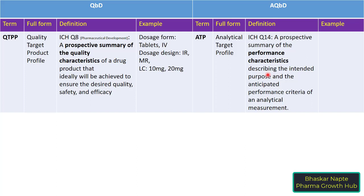We need to understand what important performance characteristics the proposed analytical procedure must meet for its intended purpose. These performance characteristics are essentially the parameters considered during method validation — for example, specificity, precision, accuracy, and linearity. So QTPP is for pharmaceutical product development, and ATP is for analytical procedure development.